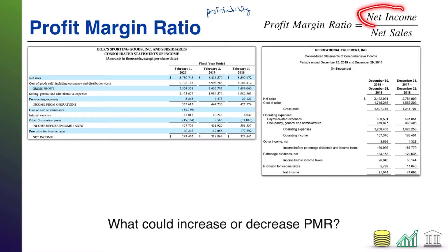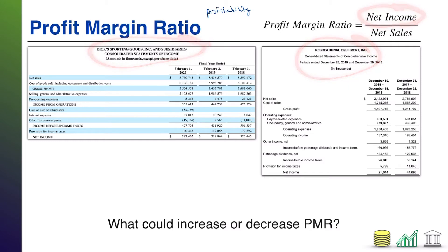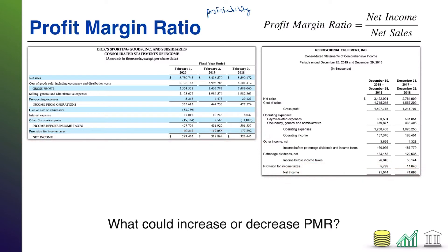Notice the numerator: net income. Net income is the very bottom line of the income statement. Here I have Dick's Sporting Goods' income statement and REI's income statement. Notice the bottom line — net income — for both. Net income follows from all the revenues of the company and all the expenses of the company: operating, non-operating, tax — it's all baked in.